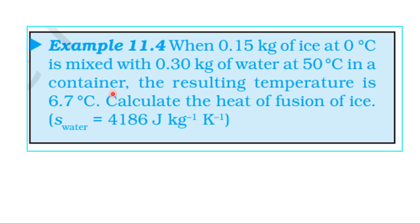From the NCERT textbook, from the topic Thermal Properties of Matter, Example 11.4: when 0.15 kilogram of ice at 0 degree centigrade is mixed with 0.3 kilogram of water at 50 degree centigrade in a container, the resulting temperature is 6.7 degree centigrade. Calculate the heat of fusion of ice. Specific heat of water is 4186 joule per kilogram per kelvin.